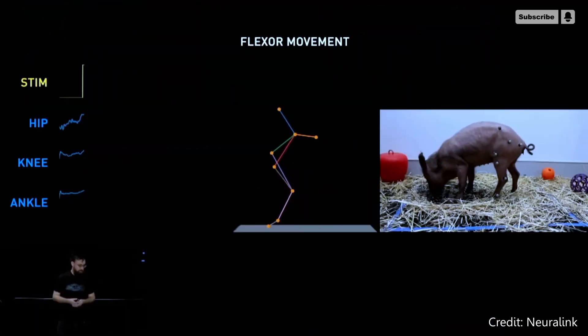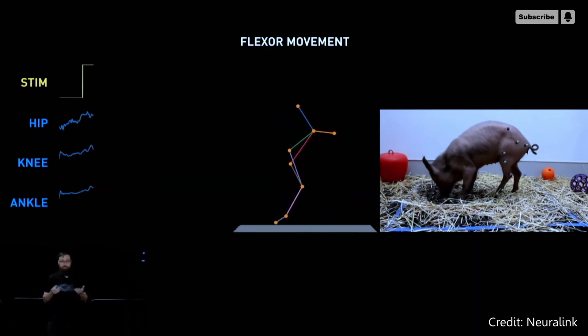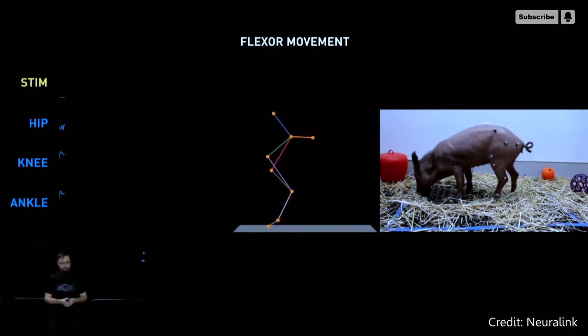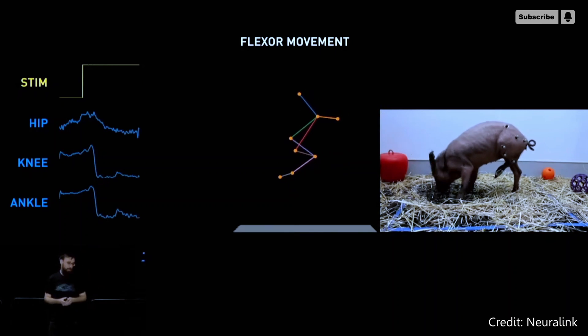Last but not least, Neuralink has performed tests proving how its brain-computer interface can stimulate a full range of movements in animals with severed spinal cords.